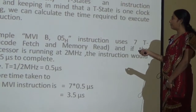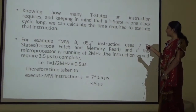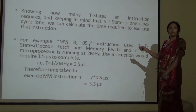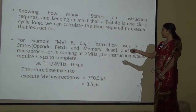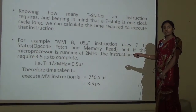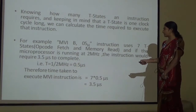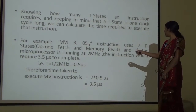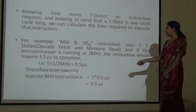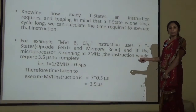For example, the instruction MVI B, 05 — move immediately the data 05 into register B — has seven T states: opcode fetch (4 T states) plus memory read (3 T states) = 7 T states. Assuming the microprocessor runs at 2 MHz, the time period is 1/2 MHz = 0.5 microseconds. Therefore, the time taken to execute MVI B, 05 is 7 × 0.5 = 3.5 microseconds.